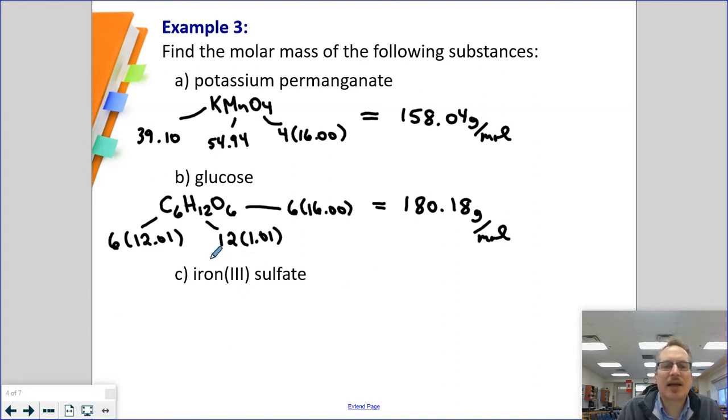Iron(III) sulfate. That means we have a charge of 3 in iron. Sulfate is negative 2. So I'm going to need more sulfate, I'm going to need another iron, I'm going to need another sulfate. So we're going to write this as Fe2(SO4)3.